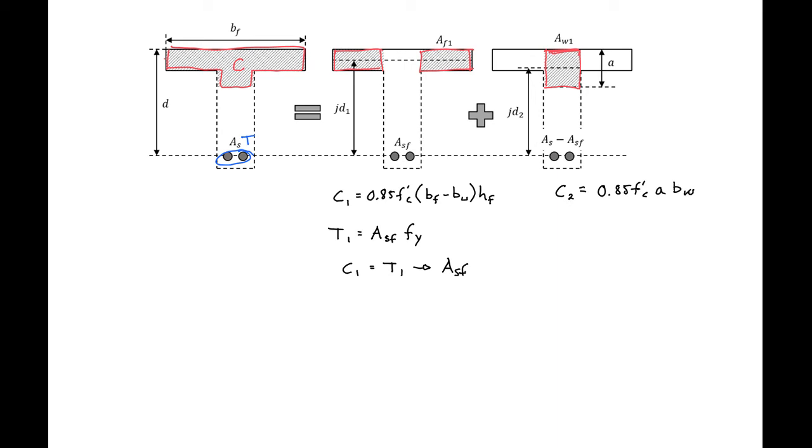So then we can also find our tension force, t2, which will be equal to the steel that we have. So our as minus asf times fy. And here now we can set c2 equal to t2 and in this expression the only unknown will be a. So we can use this expression to solve for the depth of our compression block.